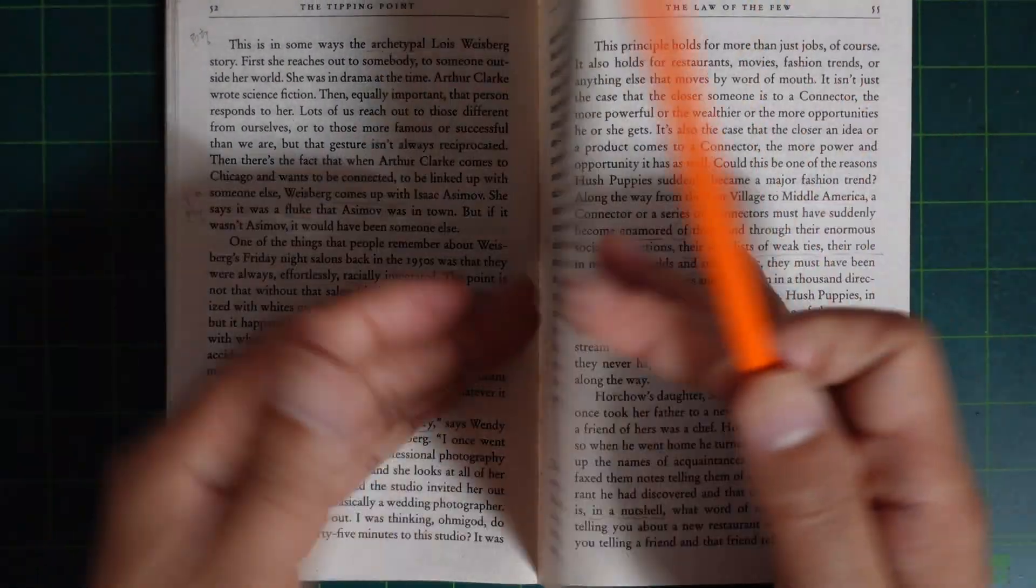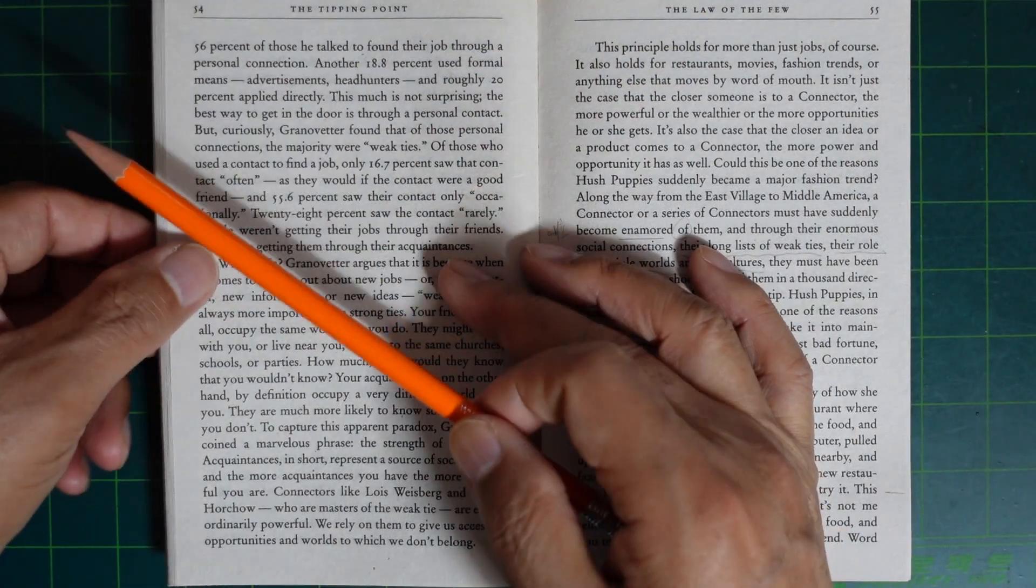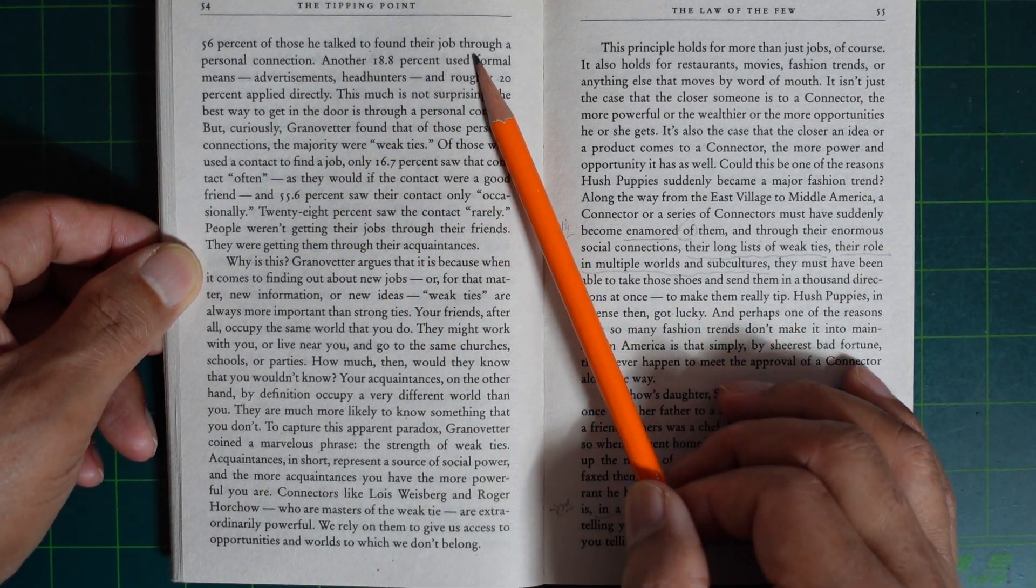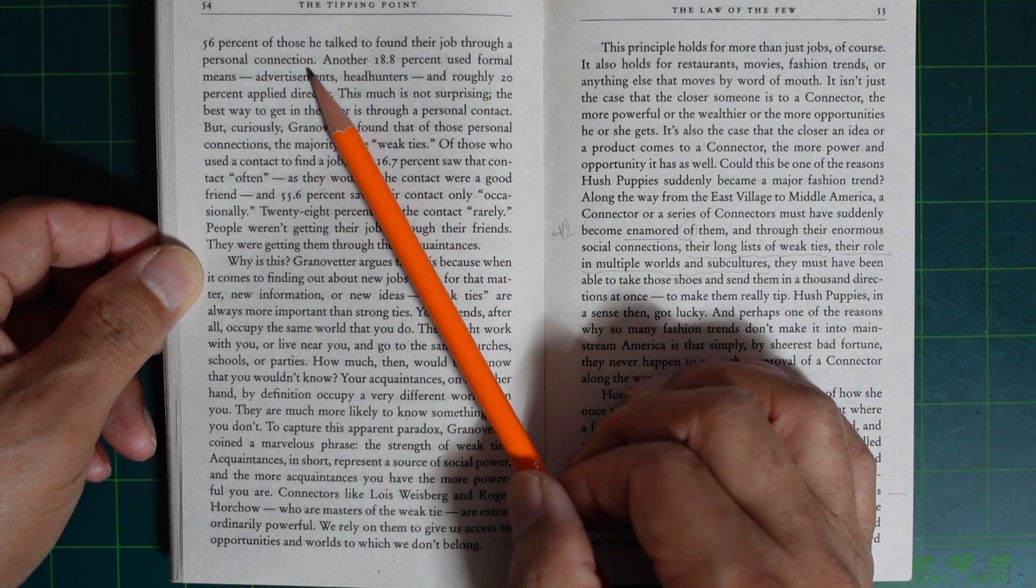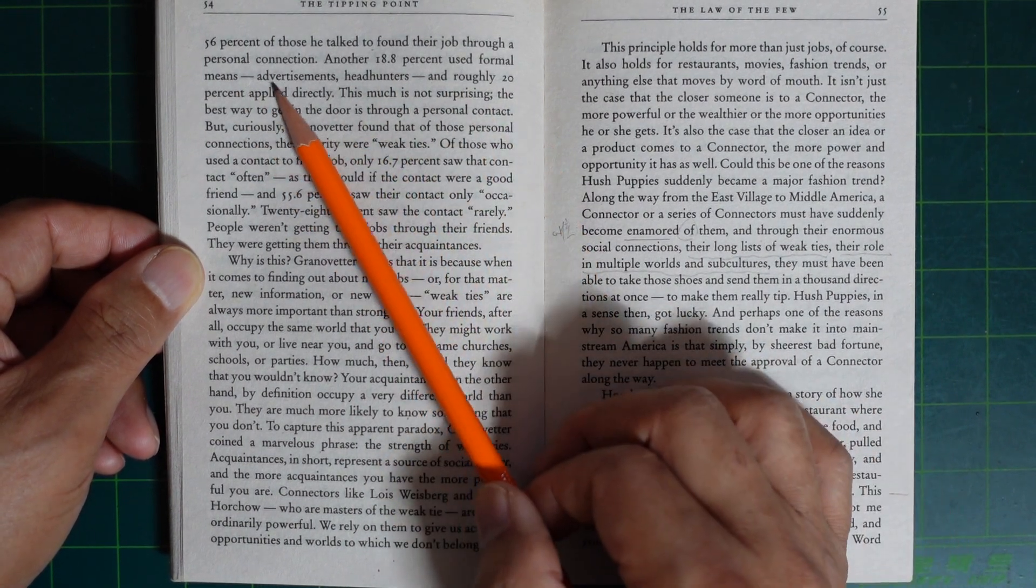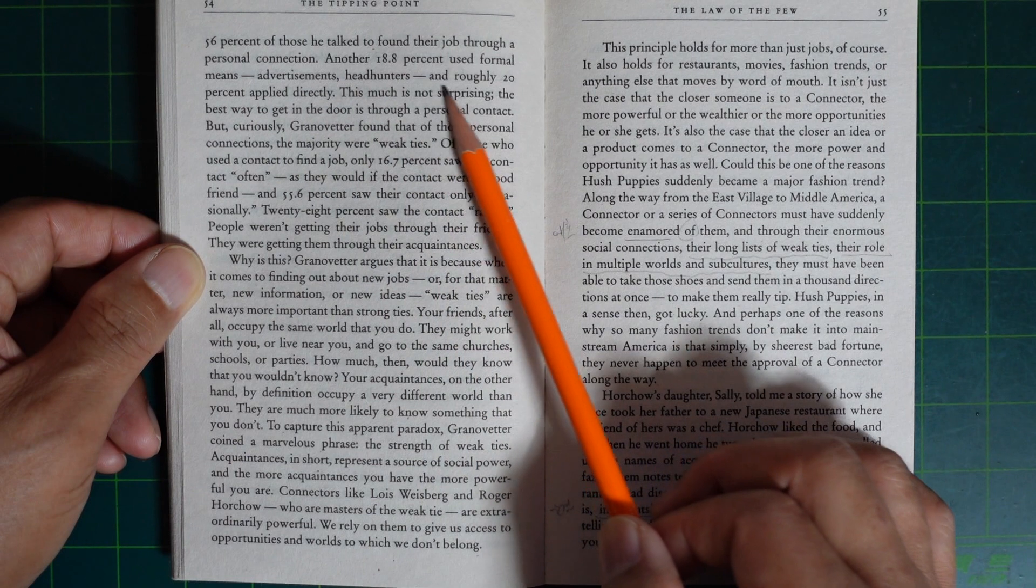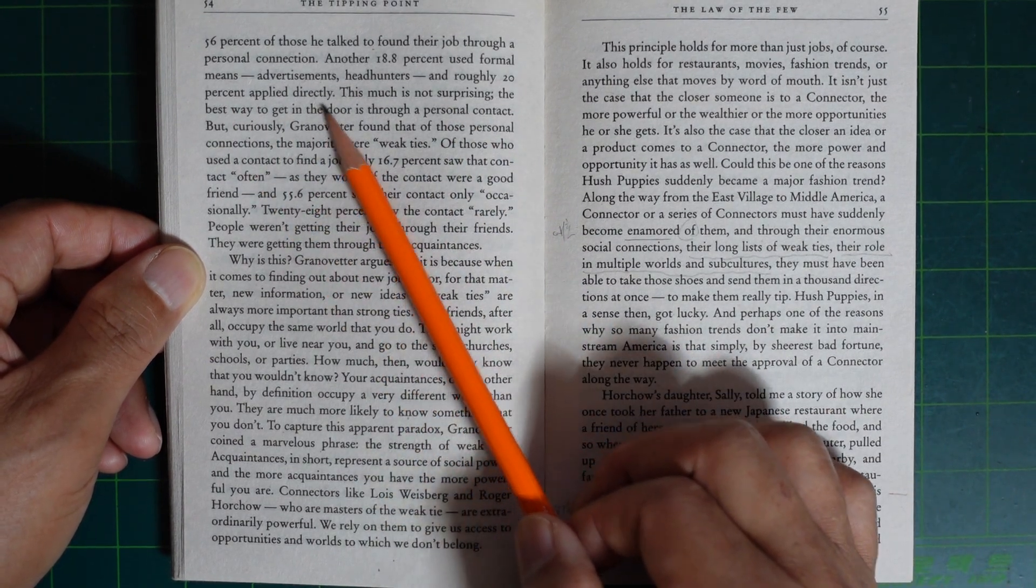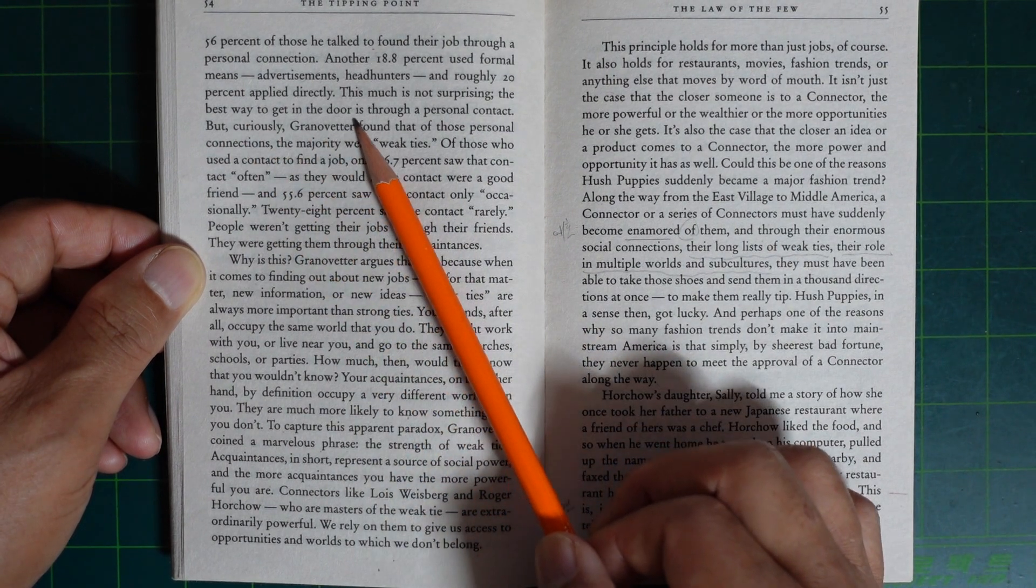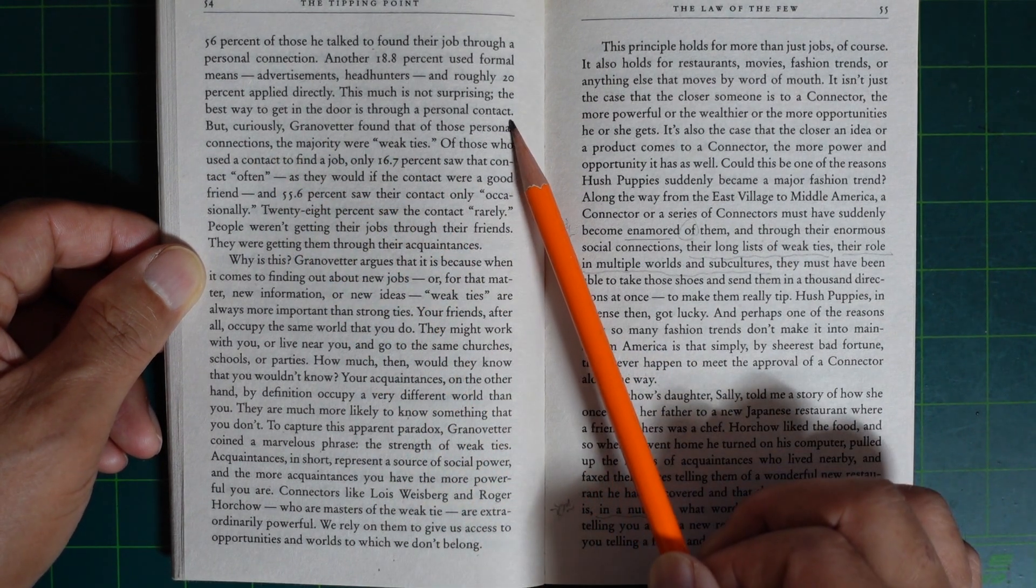He found that 56% of those he talked to found their job through a personal connection. Another 18.8% used formal means—advertisements, headhunters—and roughly 20% applied directly. This much is not surprising. The best way to get in the door is through personal contact.